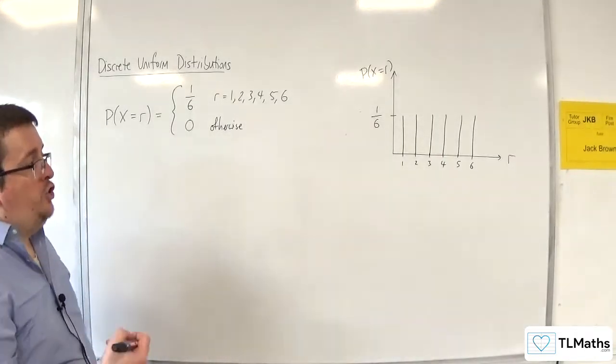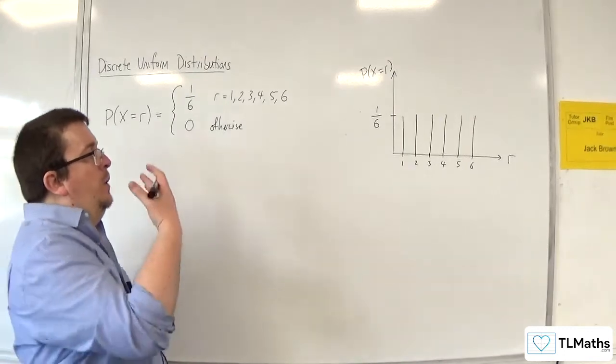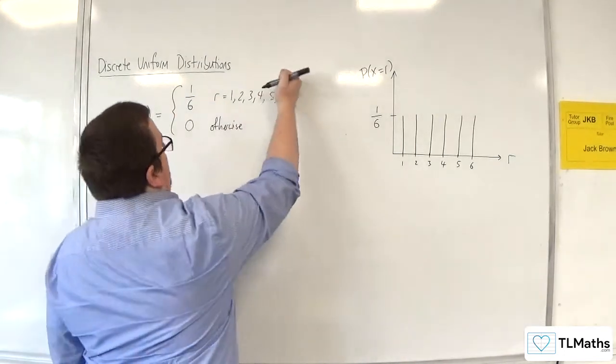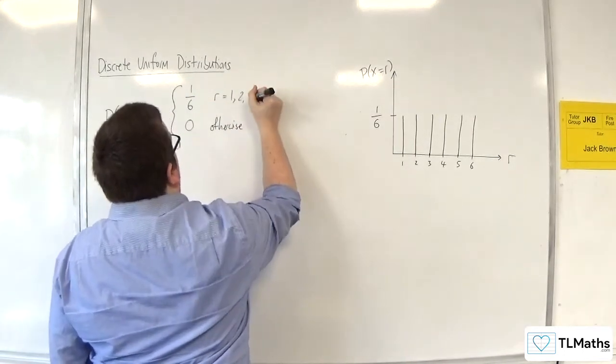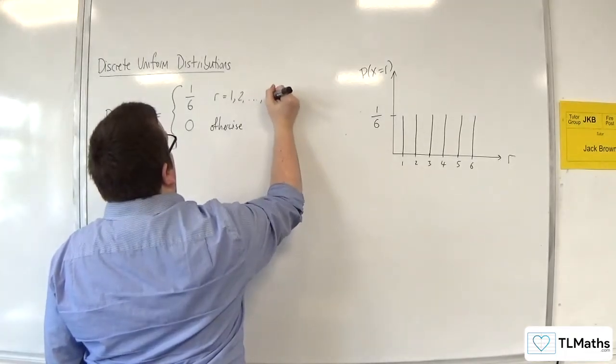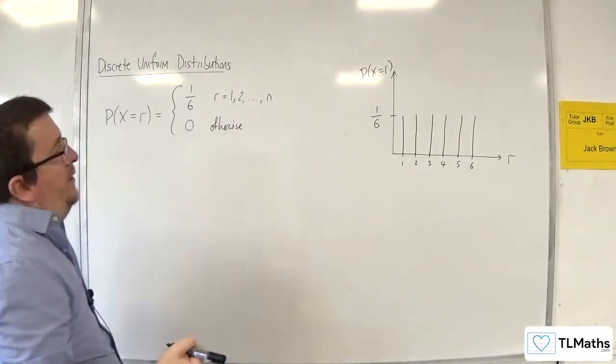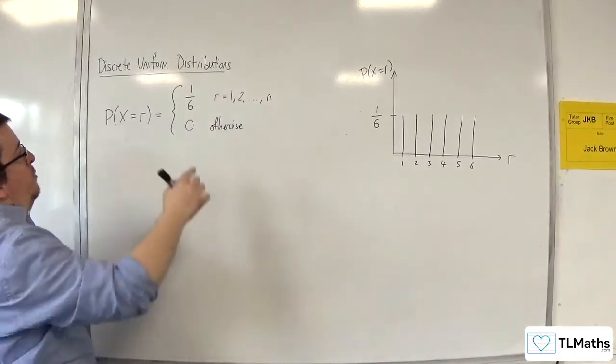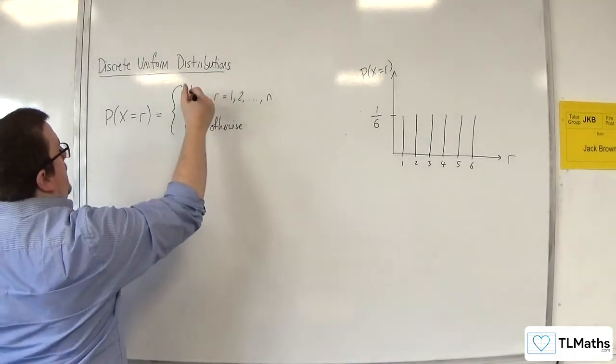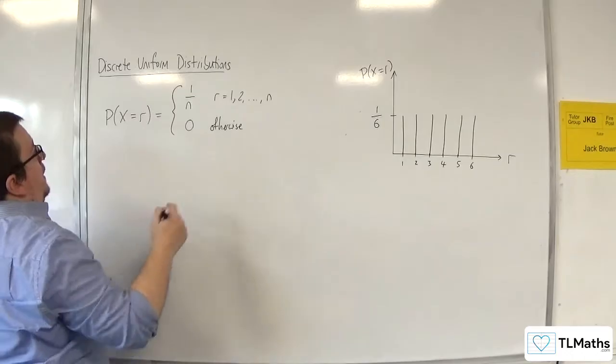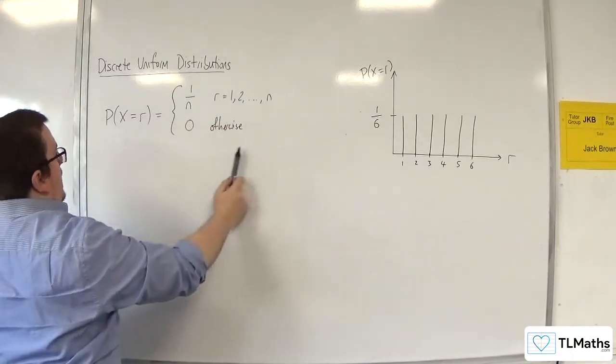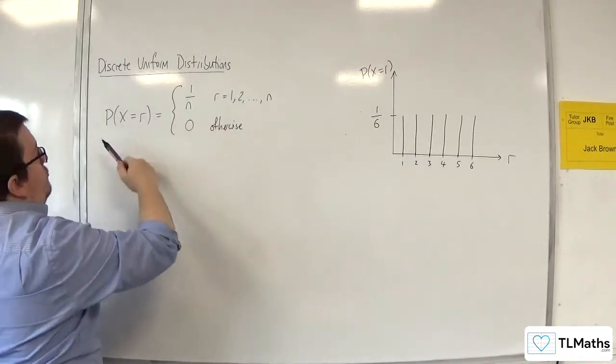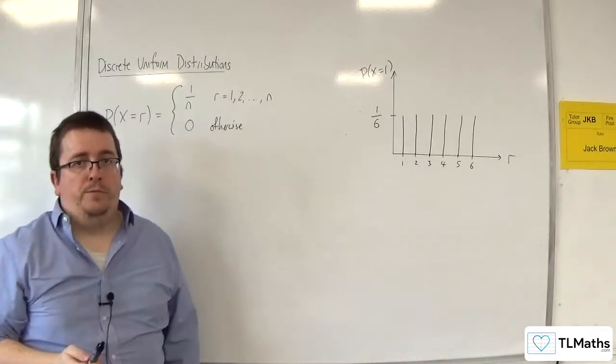Now if we want to do this generally, we write it as going from r is 1 up to n. So 1, 2, 3, 4, 5, 6, all the way up to n. So now because it's going up to n, the probability of each event occurring is 1 over n. And so this is the way that I write down a general discrete uniform distribution.